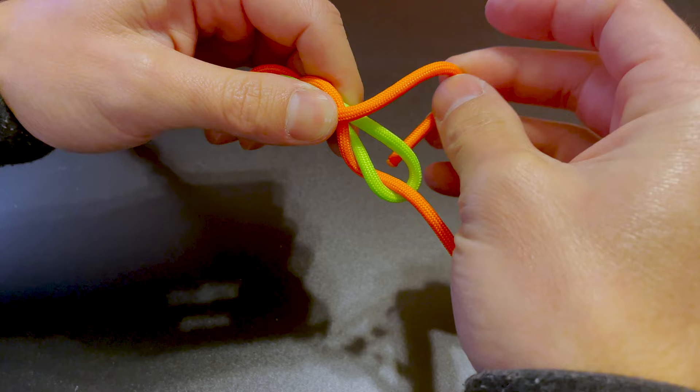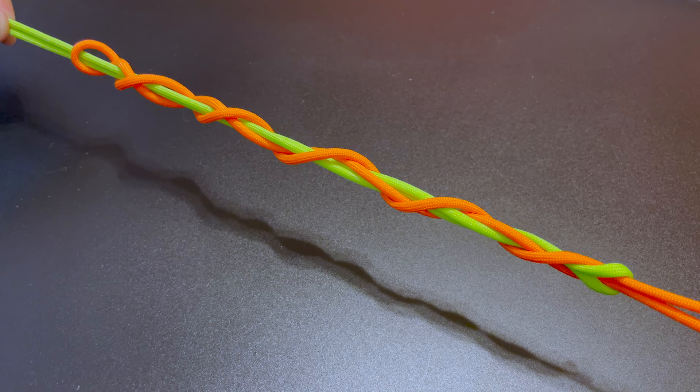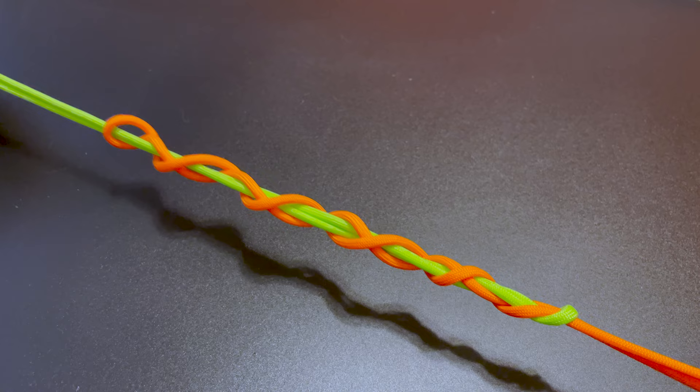So once you have it here, this is where you want to slowly start to pull all the tag ends and the main line and the leader lines, all four of them. And then when you get it down, cinch down, not all the way.